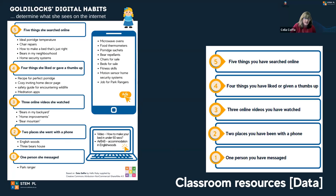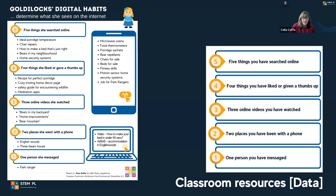Another example for the primary class is an activity adapted from Hello Ruby called a 'data selfie,' which we're now calling our 'digital habits' activity. A template is ready for download and use. In this activity, students list elements of their recent browsing history and analyse how that history can be used to determine future recommended sites and advertisements. Students explore how search engine algorithms tailor suggestions for advertisements and video games based on past viewing history, and we talk about the idea of filter bubbles or echo chambers within data usage.